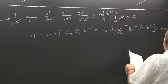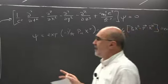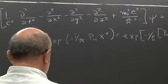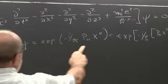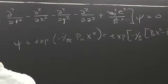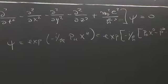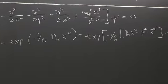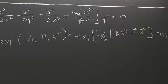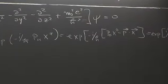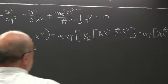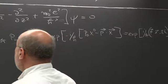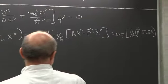From these plane wave solutions, c has disappeared. It disappeared because p_0 was E/c and x_0 was c*t, so when you multiply p_0 * x_0 the c cancels. This is an important point. The solution has the usual form of a non-relativistic plane wave.